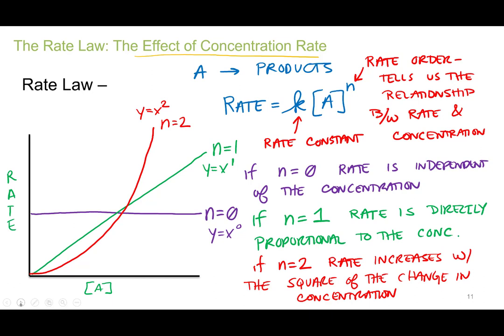It turns out it's a little more complicated than that. Most of the time it is either directly proportional or proportional with the square of the increase. The way you really tell the effect of concentration on rate is by looking at the rate law: rate equals the rate constant times the concentration of that reactant raised to some order n. If there are multiple reactants we might use m, n, and o — each reactant has its own order, and technically they can be any decimal value.